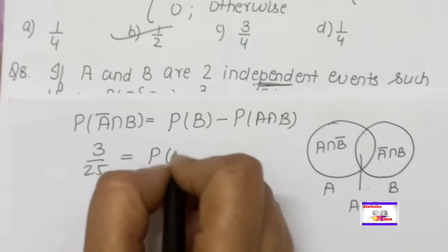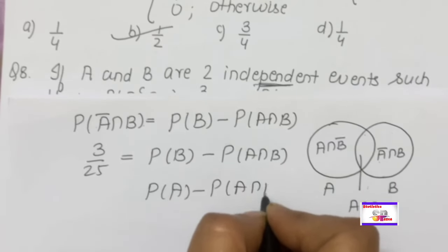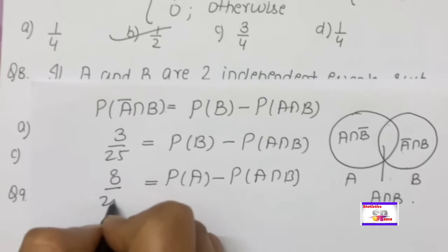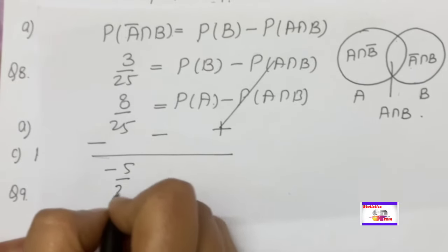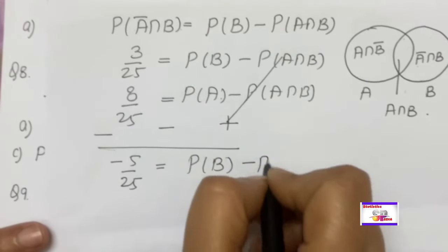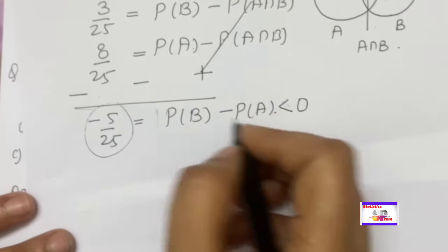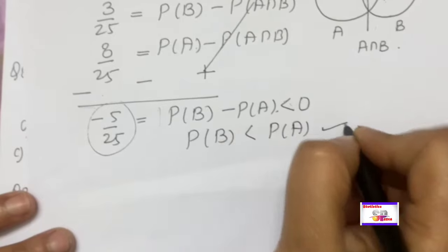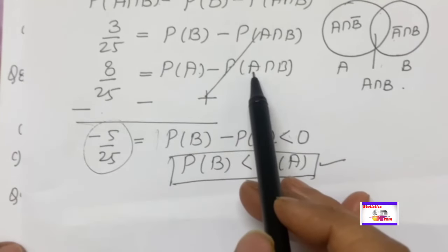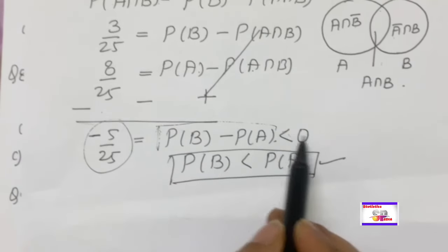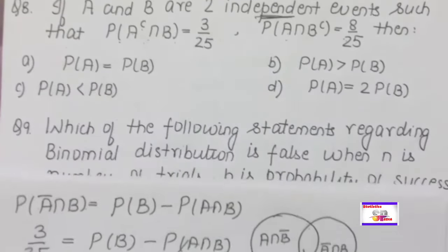Similarly, P(A∩B̄) = P(A) − P(A∩B) = 8/25. Subtract the two equations: P(B) − P(A) = 3/25 − 8/25 = −5/25. The result is negative, meaning P(B) − P(A) < 0, so P(A) > P(B). Using the elimination method on the two normal equations, since the answer is negative, P(A) is greater than P(B). So the relation is P(A) > P(B).